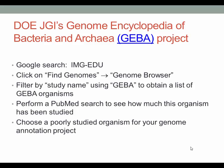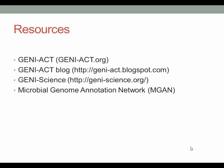Here I briefly describe that process. You Google search for IMG-EDU. There is a tab called Find Genomes, and from a drop-down menu you can select Genome Browser or Genome Search. On the new page, you can filter by study organism, typing in GEBA, which will give you a list of the GEBA organisms. Go down that list looking for interesting organisms, then perform a PubMed search to see how much the organism has been studied. I recommend choosing a poorly studied organism for your Genome Annotation Project.